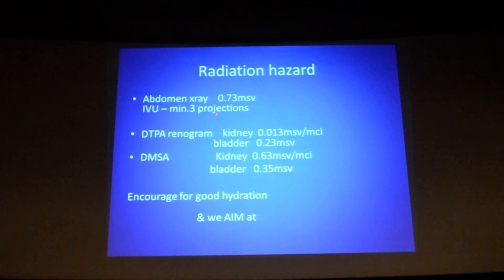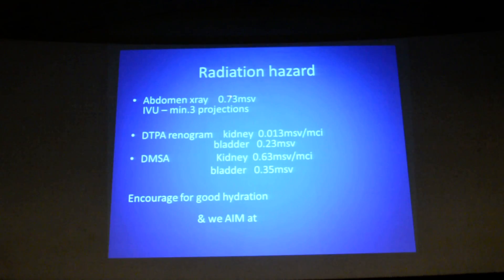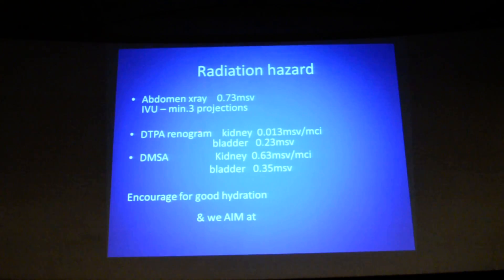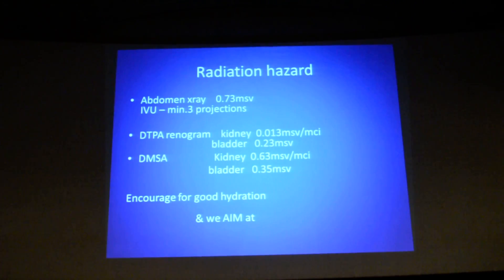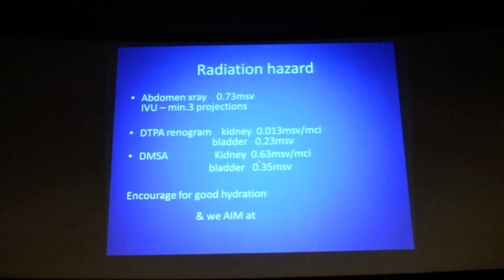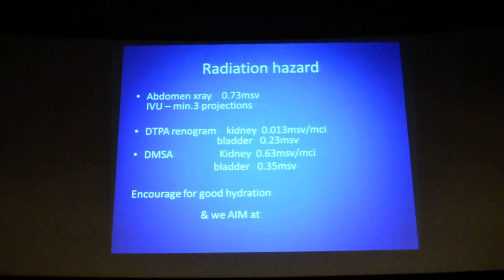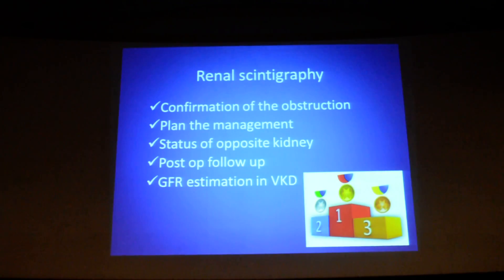Coming to radiation hazard: for a single abdominal radiograph it is 0.73 mSv, whereas for a DTPA renogram you see the kidney and the bladder with almost less than one-tenth of that radiation. With DMSA, because there is a lot of cortical retention, you will have more radiation compared to DTPA, but if you encourage good hydration we can aim for good radiation protection.